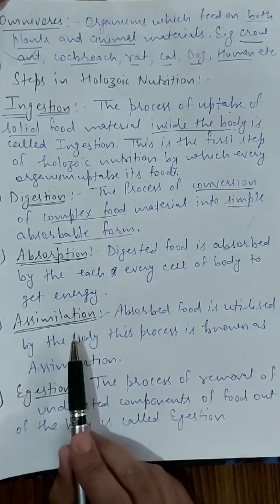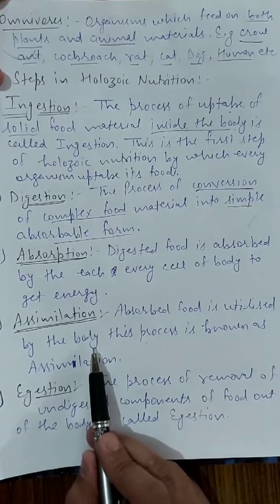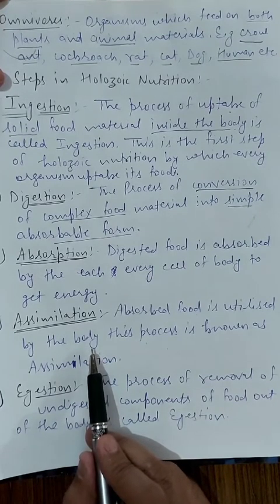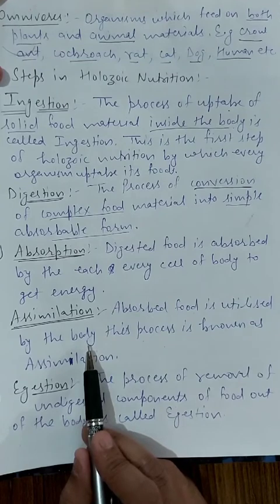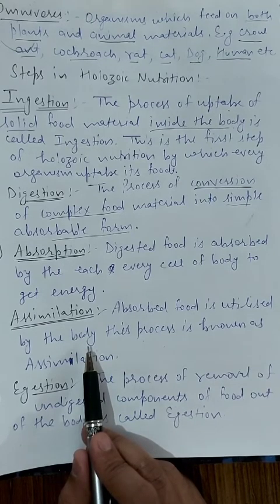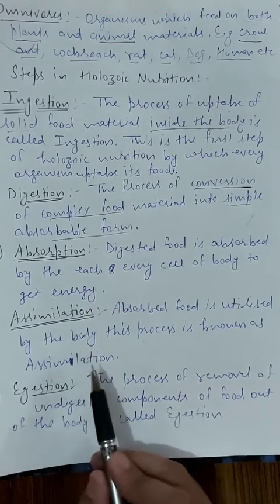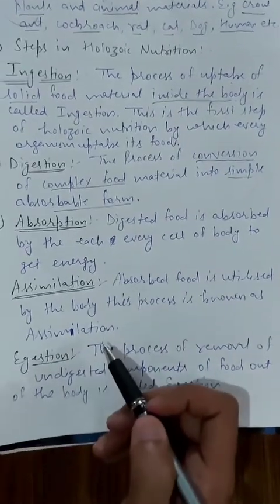The fourth step is assimilation. Absorbed food is utilized by the body. The simple food that was converted during digestion is now used for body building — it is converted back into complex material according to the body's needs so that it can participate in the body-building process. This is known as assimilation.